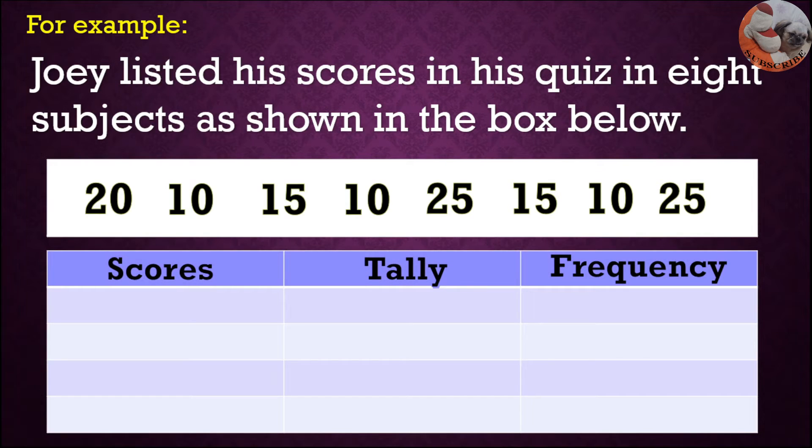Make a table with the following headings: Scores, Tally, and Frequency. Under scores, you write 10, 15, 20, and 25.